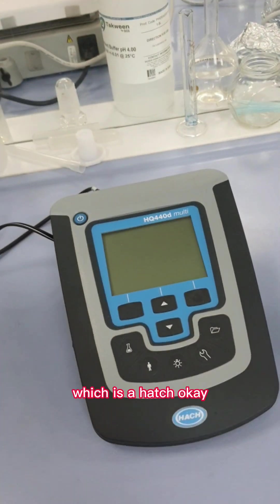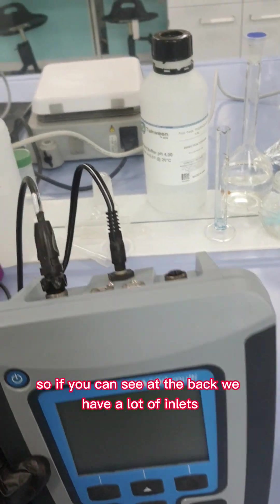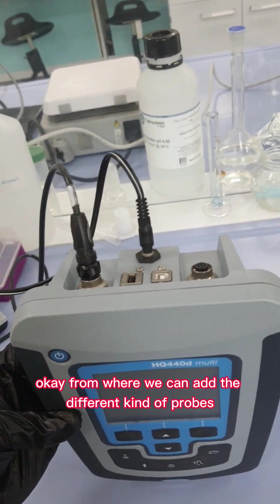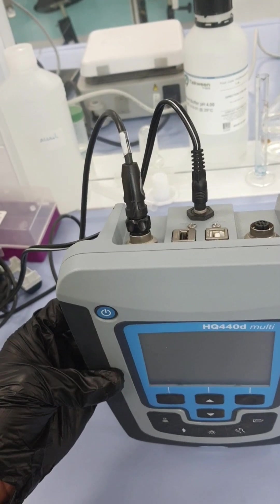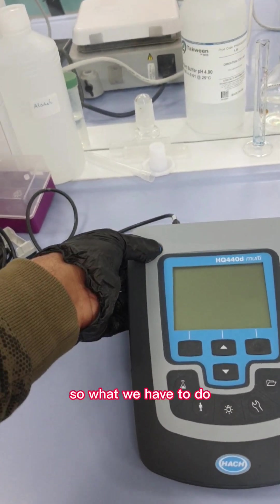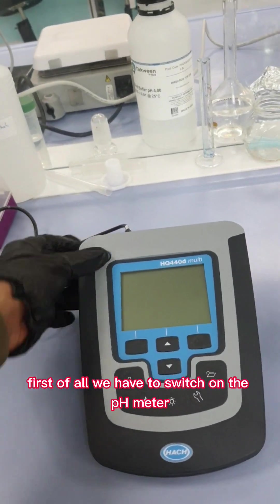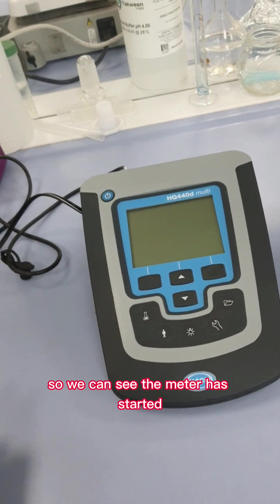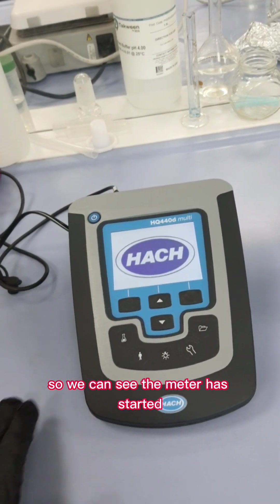A different brand which is Hach. If you can see at the back, we have a lot of inlets from where we can add different kinds of probes. For now, this is attached to a pH meter probe. What we have to do first of all is switch on the pH meter. You can see the meter has started.